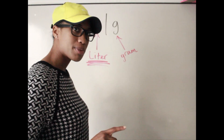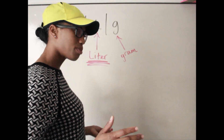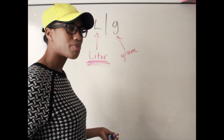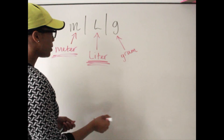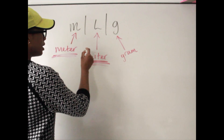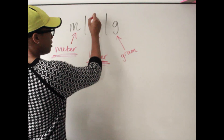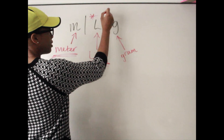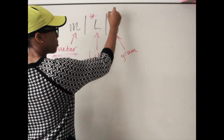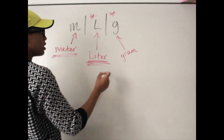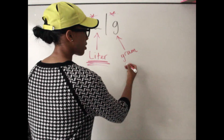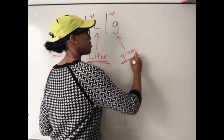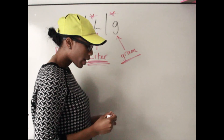The two units you're going to use the most in the pharmacy are liters and grams. Those are basically the two you're just going to use.